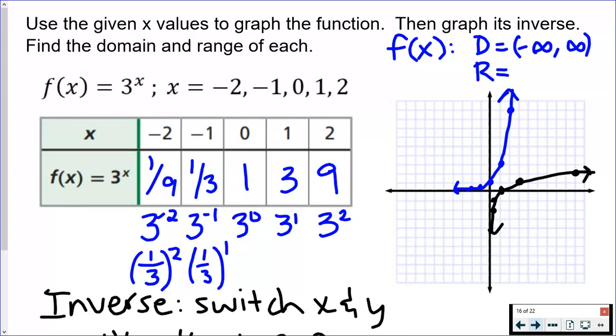So the domain would be all real numbers, negative infinity to positive infinity. There are no limits to your x values. That graph is going to go forever to the left and forever to the right. Again, I'm looking at the original graph only, not the inverse, the original one, the blue one.